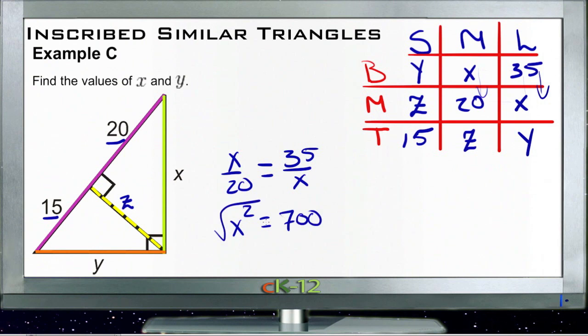So I was getting ready to take the square root there. Take square root of both of those, and we get about 26 and a half. So x is 26.5, we'll say approximately.